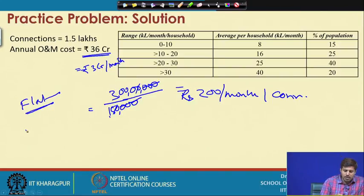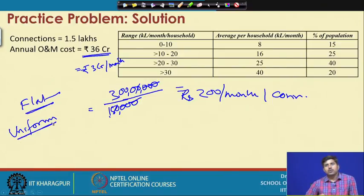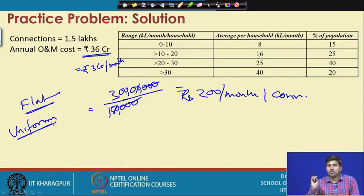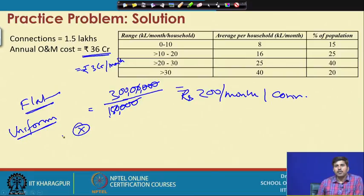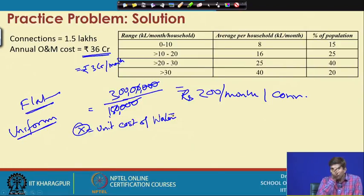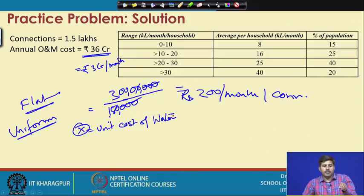Now let us look at the uniform tariff model. For a uniform tariff structure, you have a fixed unit cost of water. Let that unit cost be x rupees per kL. We know that 3 crore rupees must be collected per month, so x multiplied by the total kL consumed (y) must equal 3 crore.